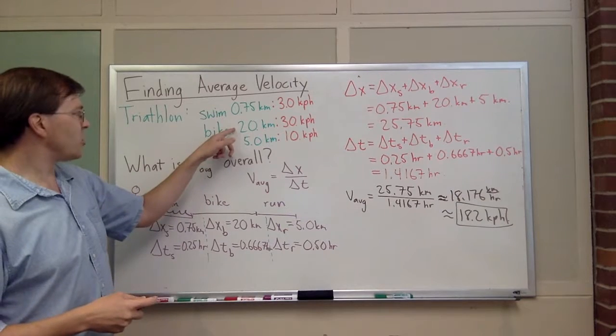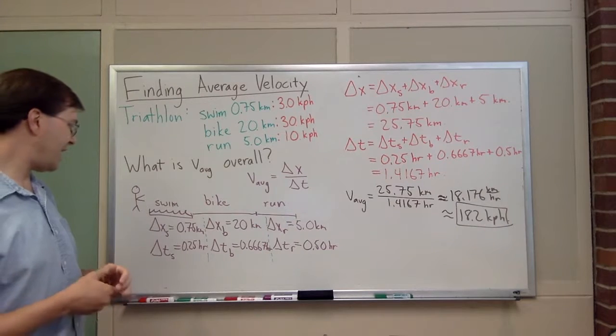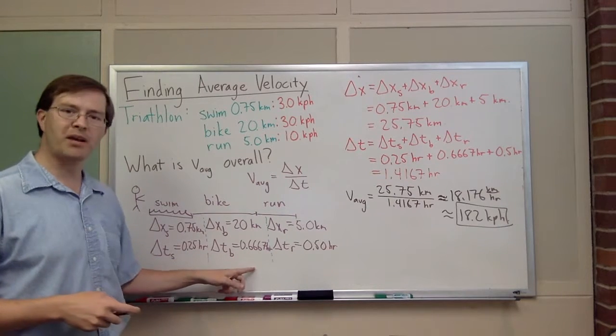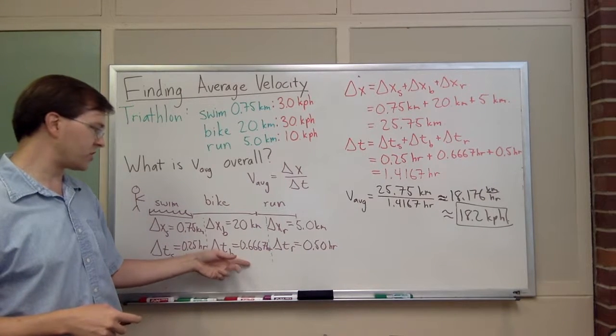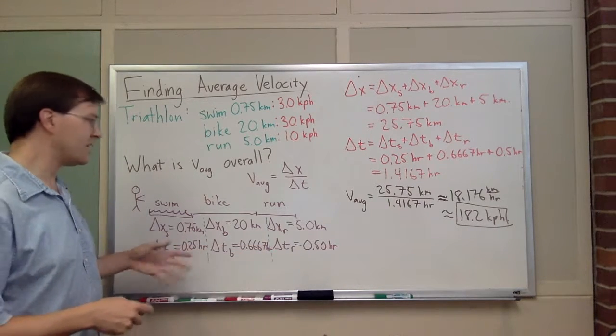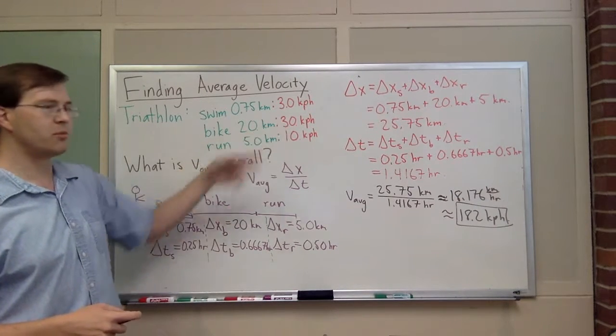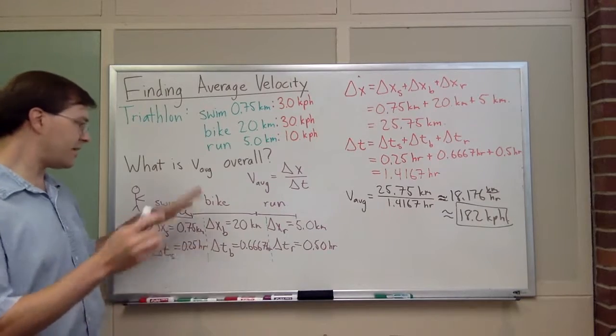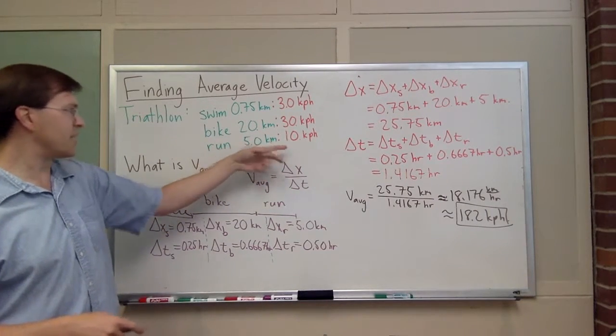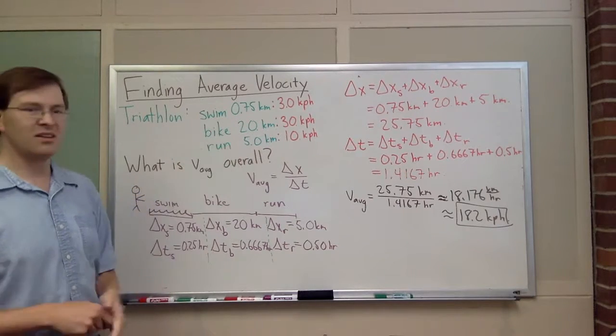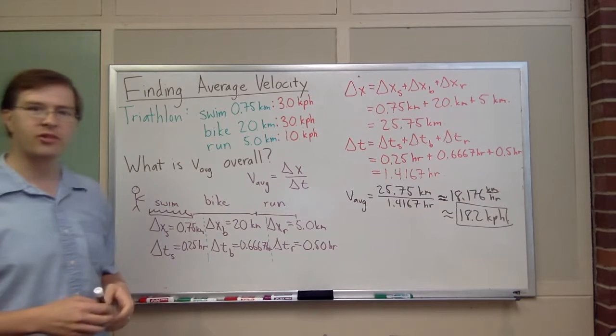Looking at it, it's actually closest to the bike speed. I guess that makes sense because the bike was going a lot longer than the others were. The bike was going for two-thirds of an hour, whereas the run was only half an hour. 18.2, it's between the bike speed and the run speed somewhere in between. It seems plausible to me. It's less than the bike speed but faster than the run speed. The swim even a lower contribution. That's our average velocity for this triathlon.